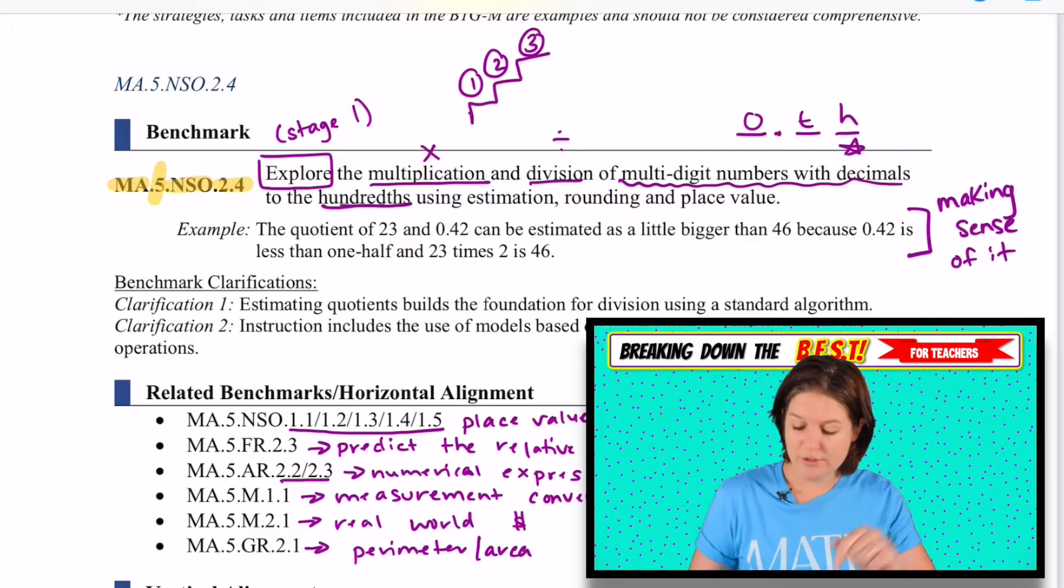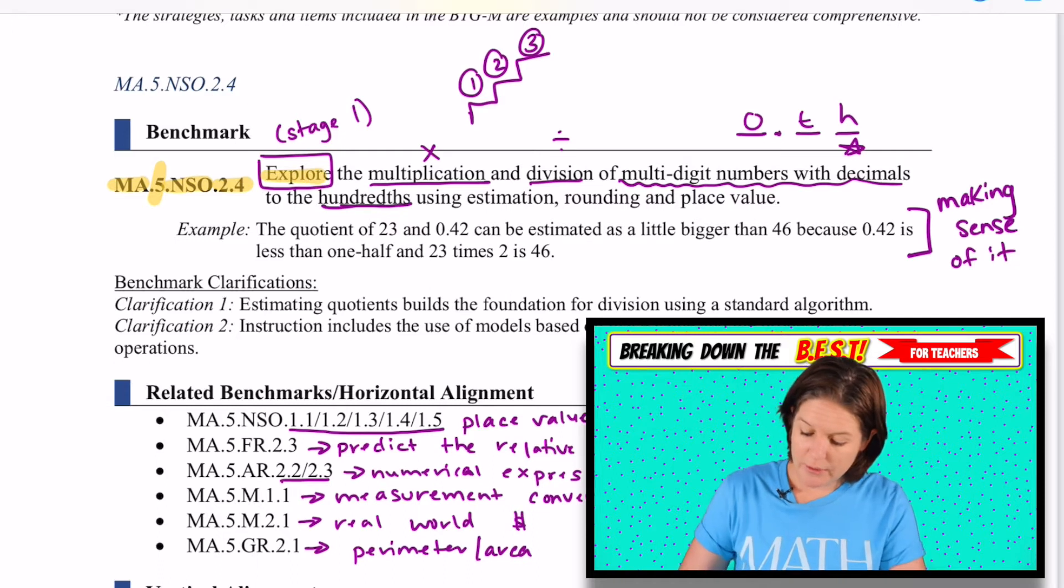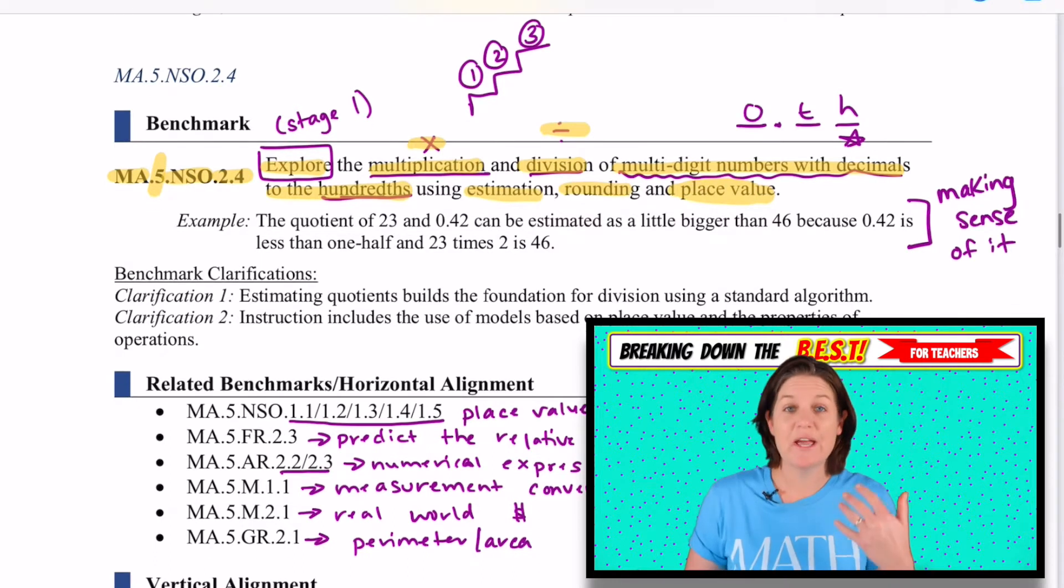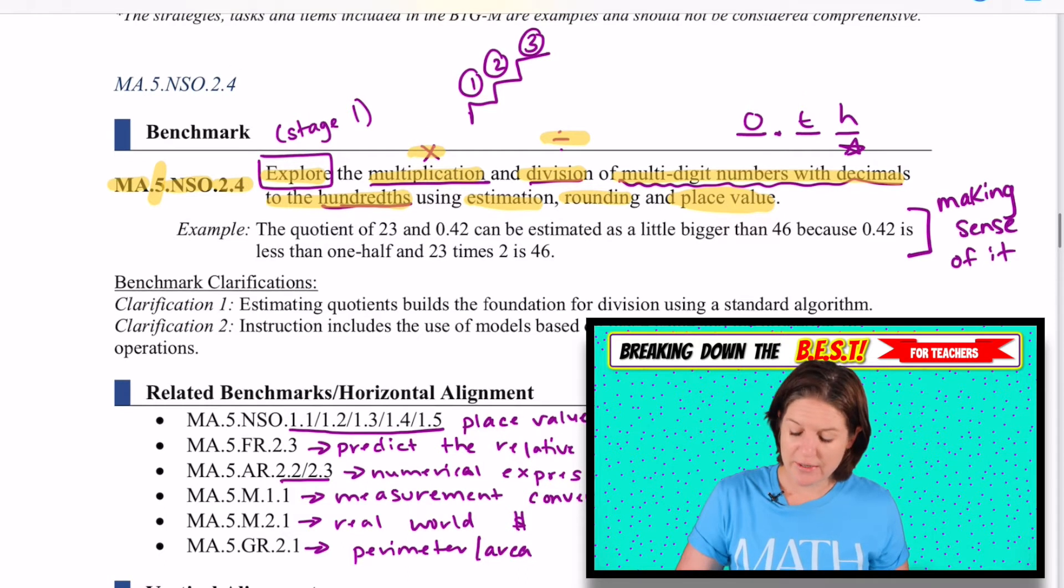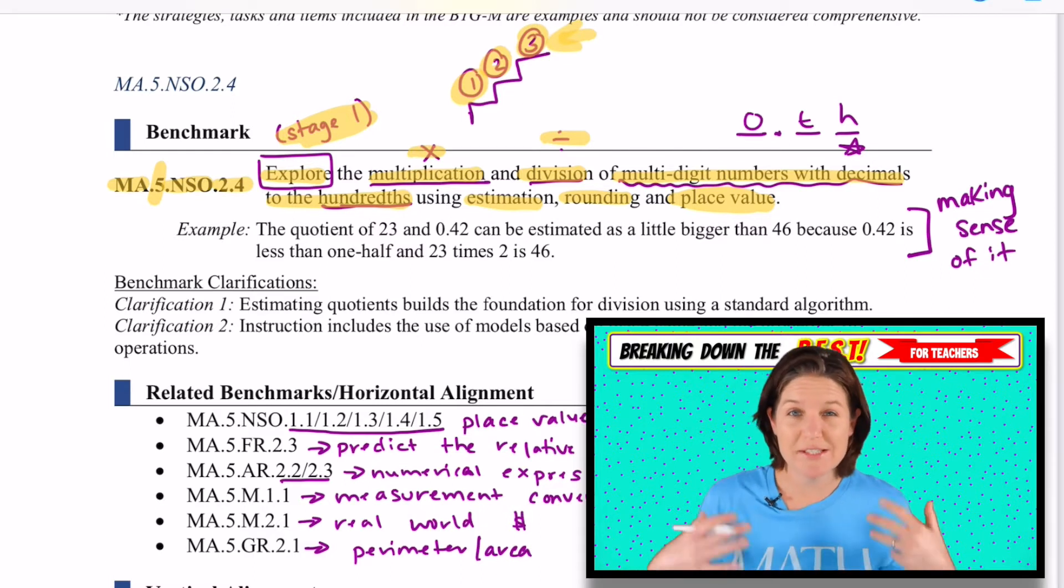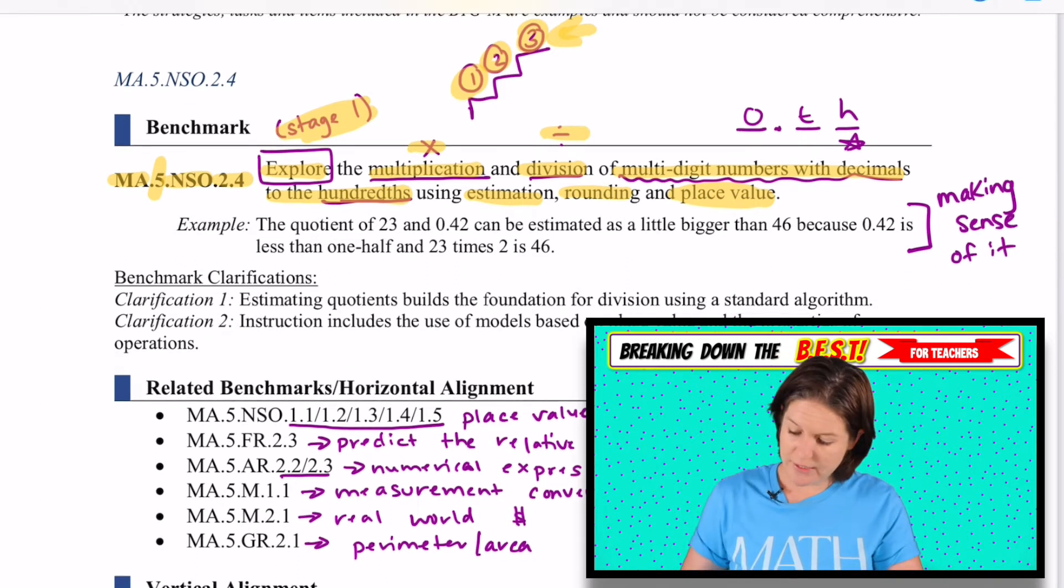For this standard, students will be expected to explore the multiplication and division of multi-digit numbers with decimals to the hundredths using estimation, rounding, and place value. Explore was that first word. I call that stage one because this is going to be their first exposure to multiplying with decimals, and we're developing an understanding. We gradually bump it up. In sixth grade, they will be working at procedural fluency with standard algorithm.